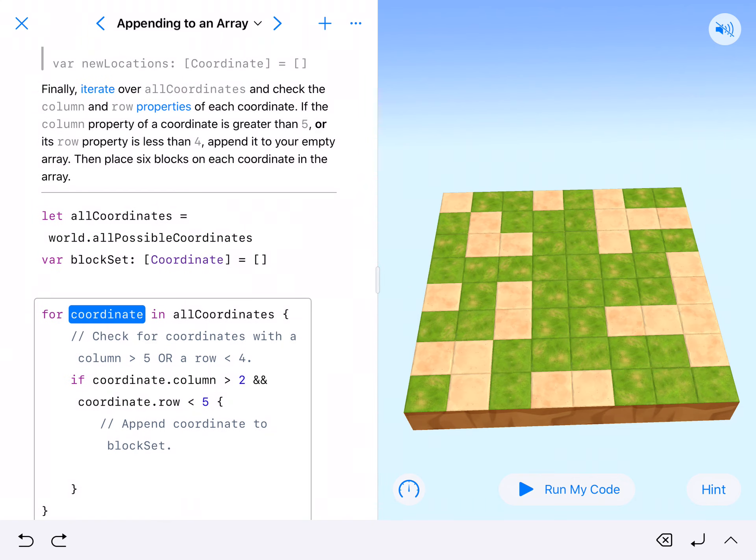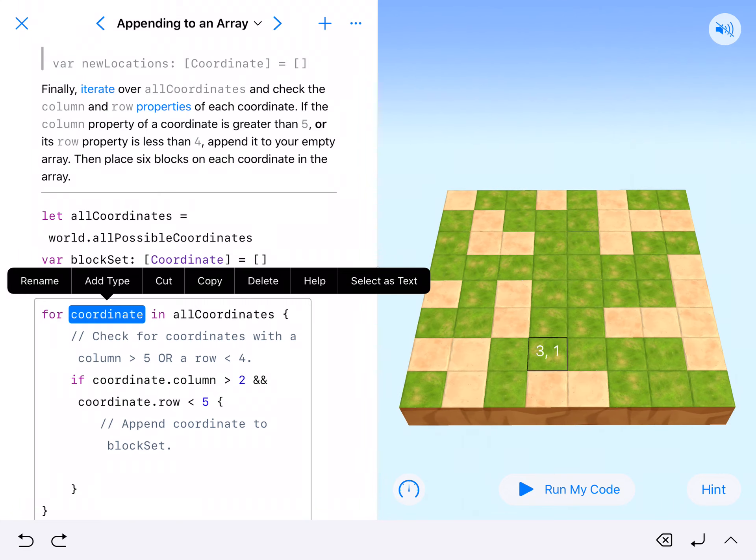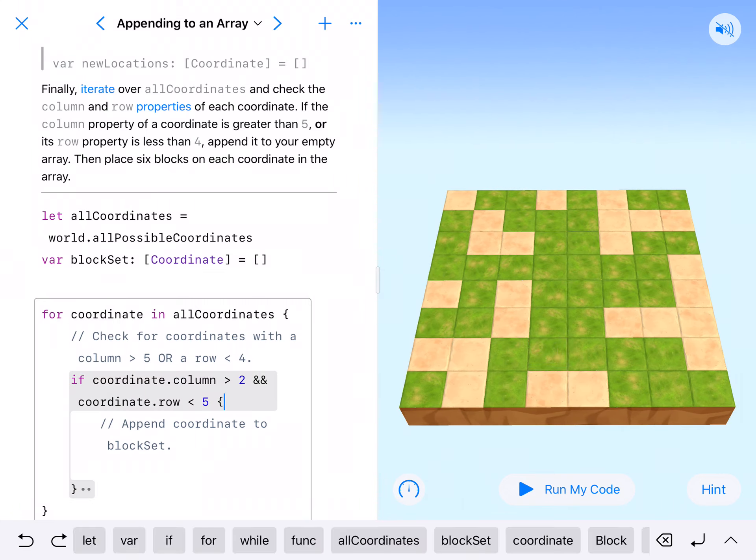We're going to do it here. So we've got for coordinate in all coordinates. And then it gives us some direction here. And it says check for coordinates with a column greater than five or row less than four.